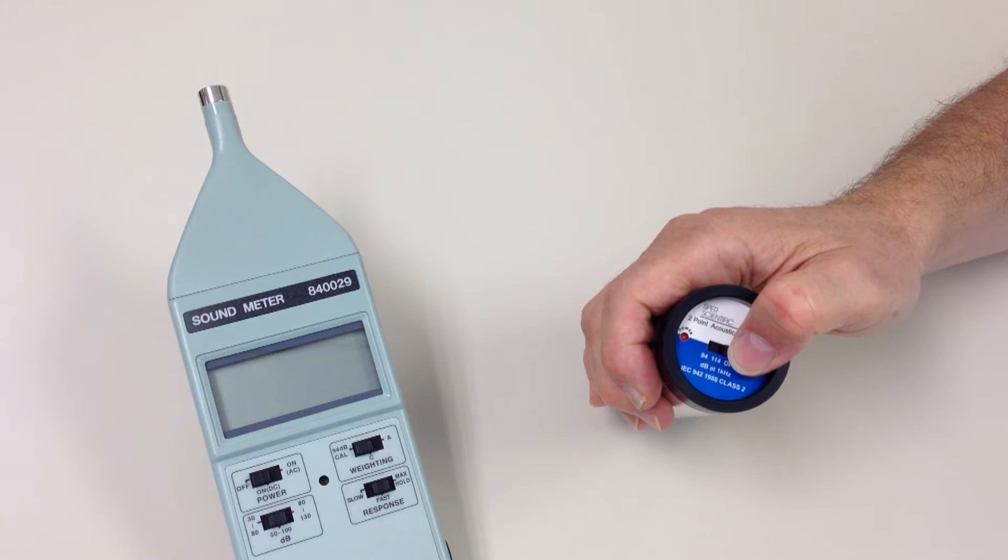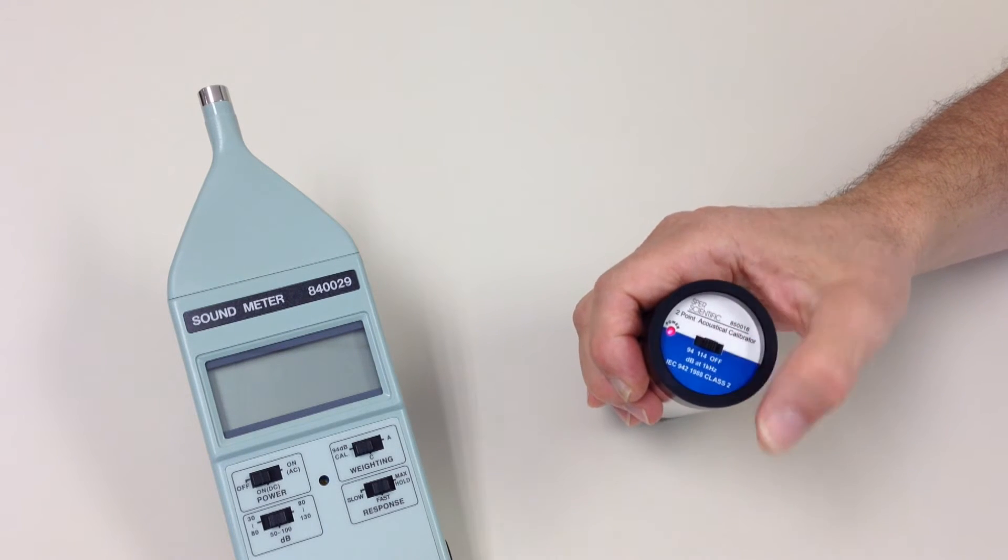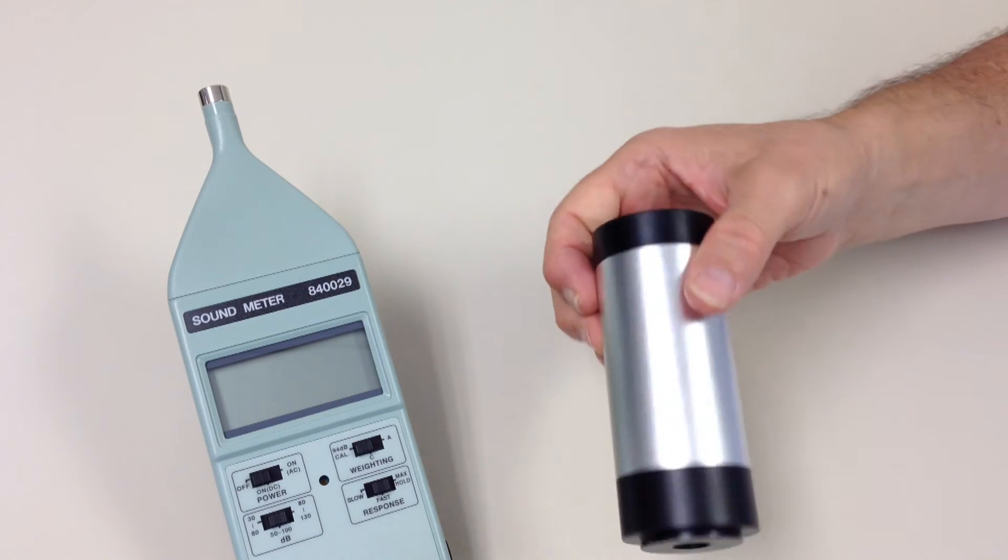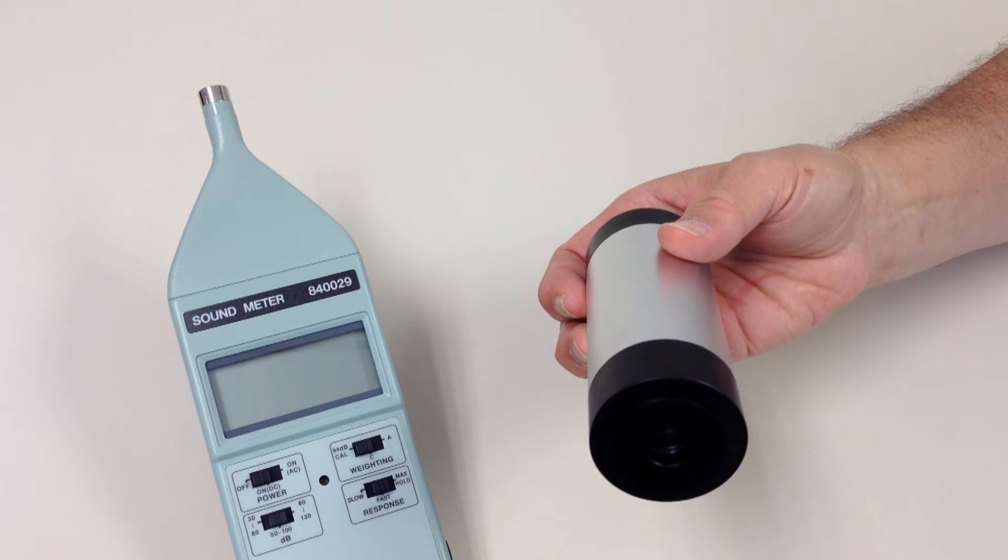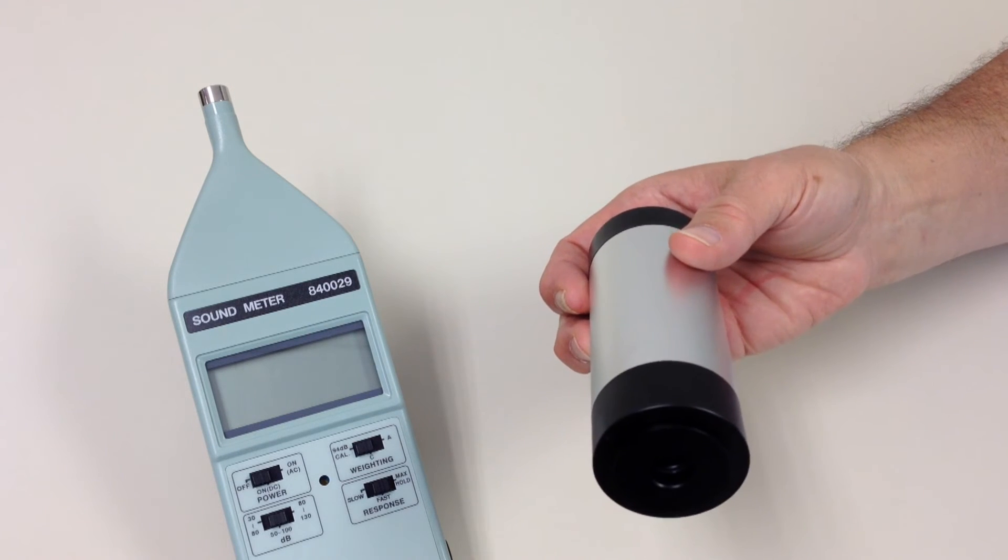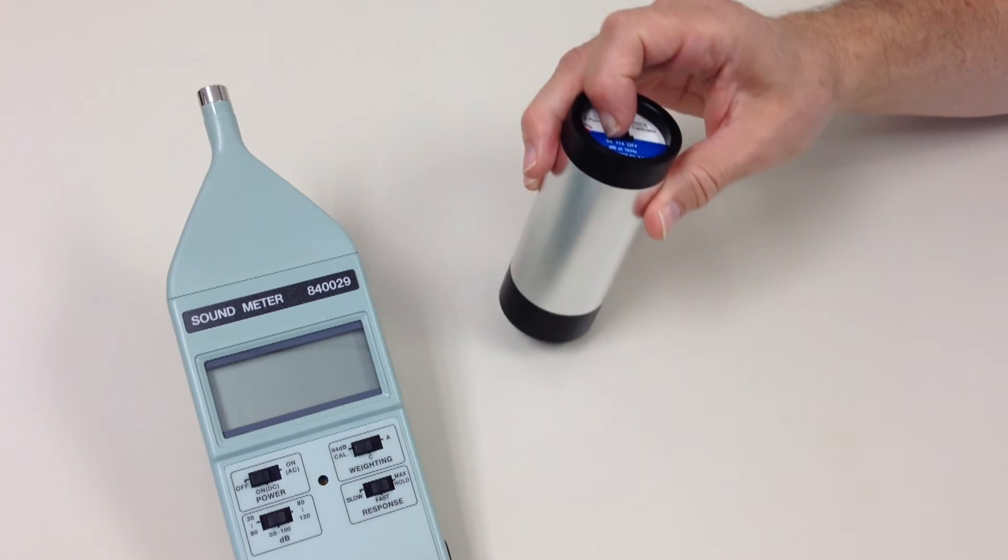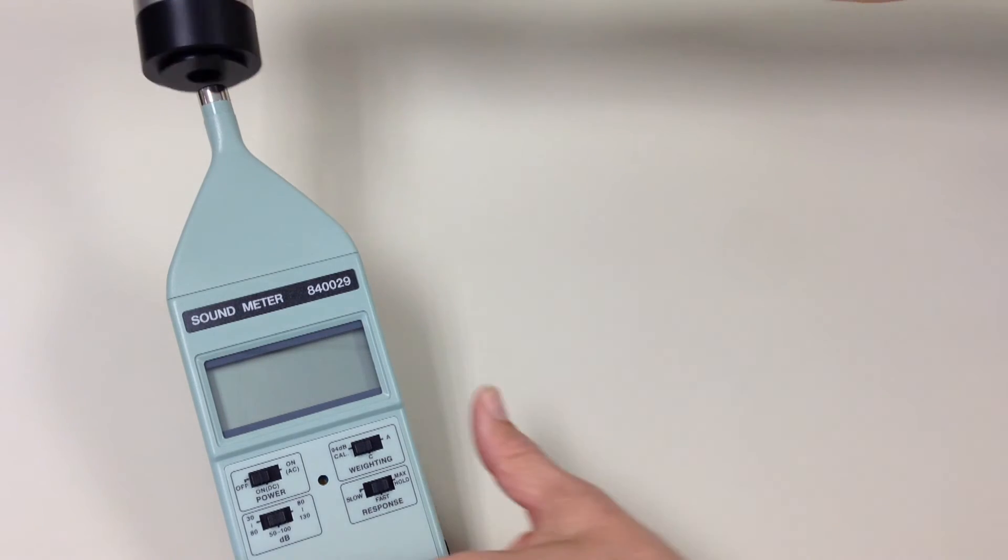To use the calibrator, turn it on and choose your calibration point, either 94 or 114 decibel. The calibrator now emits a signal at that decibel level. Next, place the calibrator over your microphone.